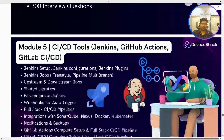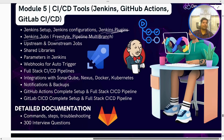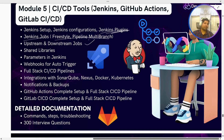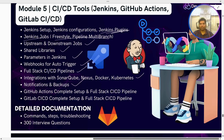Module 5 covers all four CI/CD tools: Jenkins, GitHub Actions, GitLab CI/CD, and Azure DevOps. In Jenkins, we'll set up Jenkins, understand important concepts, plugins, and all three job types — Freestyle, Pipeline, and Multi-Branch. We'll cover triggering jobs from a repository directly to enable automation, upstream and downstream jobs, shared libraries, parameters, webhooks, full-stack pipelines, and integrations with SonarQube, Nexus, Docker, and security tools. We'll also cover notifications, backup, and complete setup for GitHub Actions and GitLab CI/CD with full-stack pipelines.